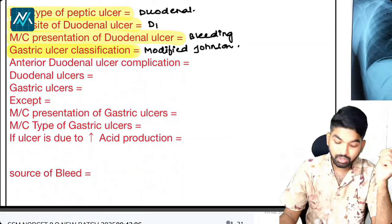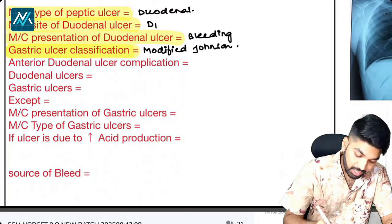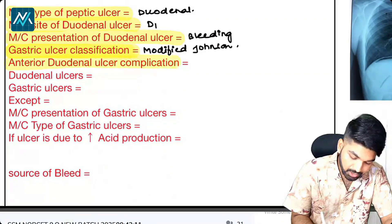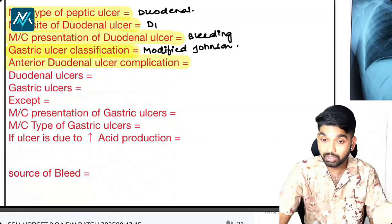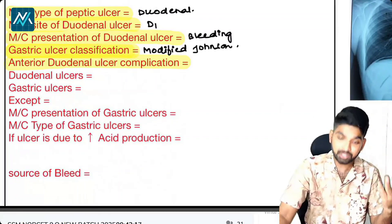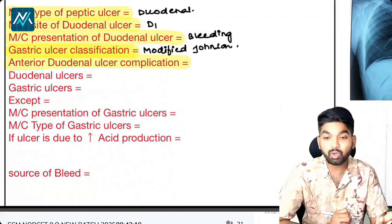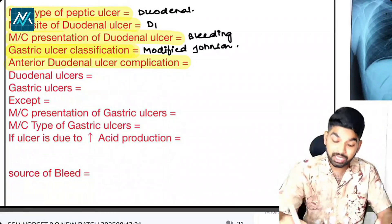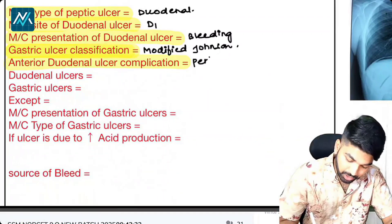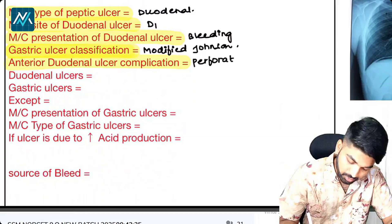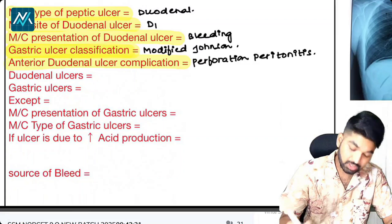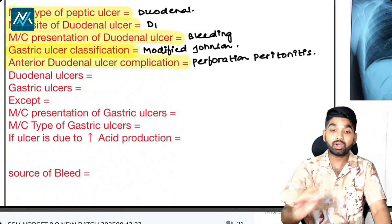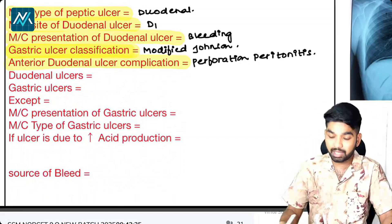Quickly tell me the anterior duodenal ulcer complication. There are two types — anterior and posterior duodenal ulcers. Anterior duodenal ulcers will perforate, causing perforation peritonitis. This is very, very important — and this is a question I got when I was writing my own exam.